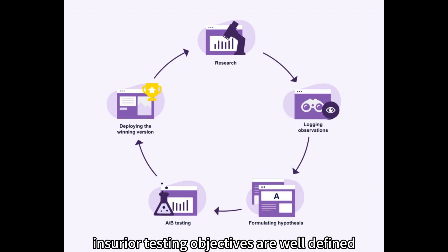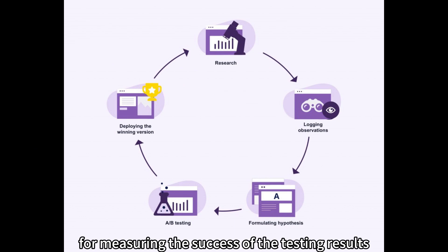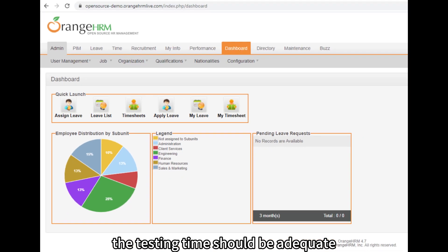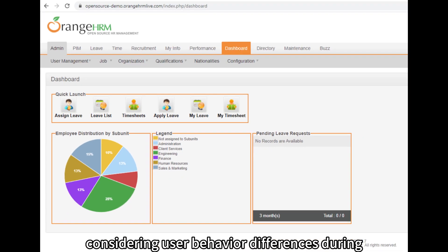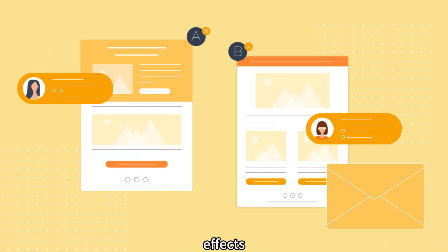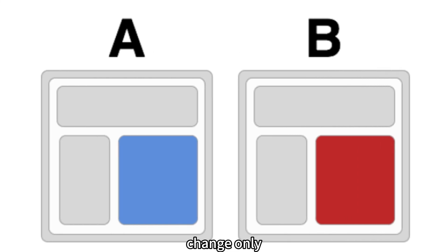Considerations. Clear Objectives: ensure your testing objectives are well-defined for measuring the success of the testing results. Sample Size: ensure the sample size is sufficiently large to obtain statistically significant results. Testing Time: the testing time should be adequate, considering user behavior differences during different periods. Element Independence: ensure testing elements are independent to accurately compare their effects. Change one element only — in each A-B test, change only one element to ensure the accuracy of the testing results.